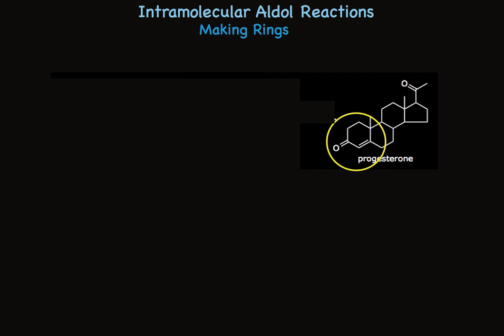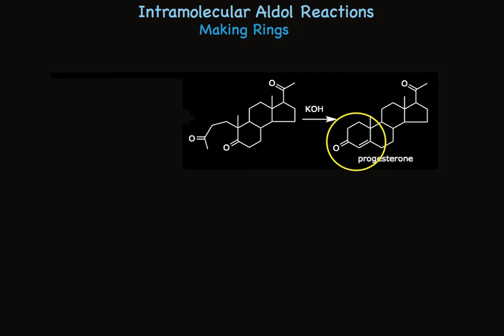The compound he would need to use is shown at the left. Treatment of this diketone, which has this exact diketone pattern, will make a 6-membered ring. In this case, the carbonyl groups are separated by only 3 carbons. So it's the enolization at the methyl group that leads to product. Once the enolate is made at this methyl group, it could add to this ketone carbonyl, closing the ring. Counting carbons starting with the methyl group, there are 6 carbons — just what we need for progesterone.